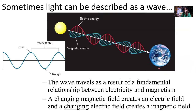Sometimes light can be described as a wave. This wave travels as a result of a fundamental relationship between electricity and magnetism: a changing magnetic field creates an electric field, and a changing electric field creates a magnetic field. These fluctuating electric and magnetic fields provide us with what we call the electromagnetic spectrum.